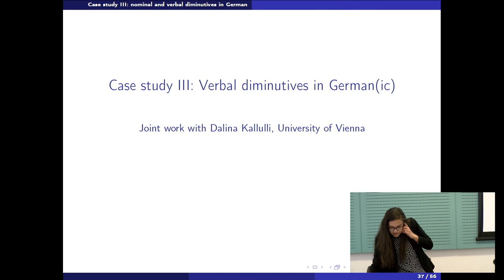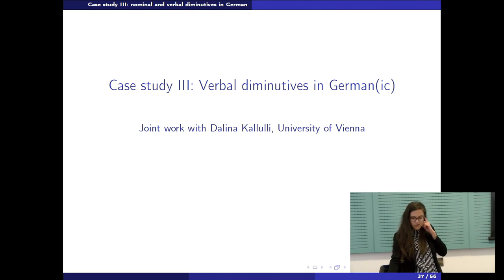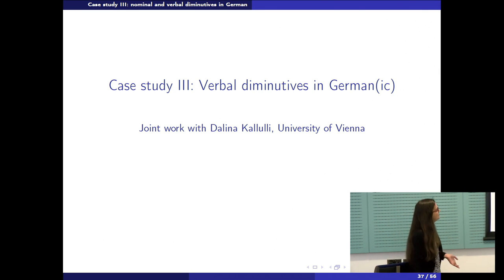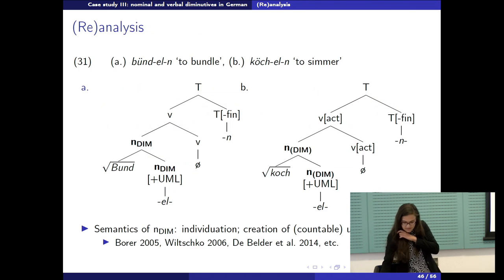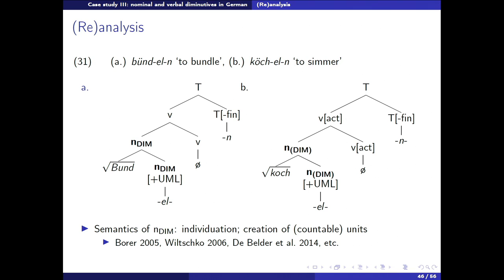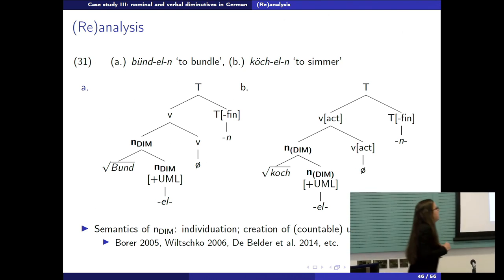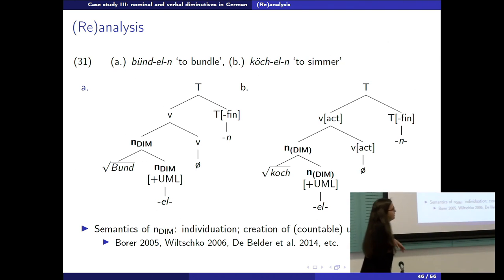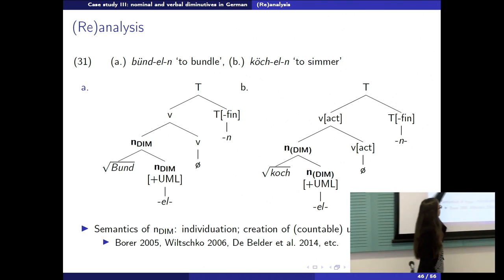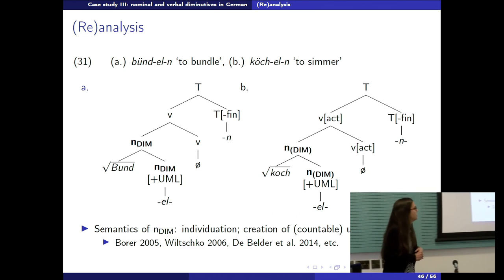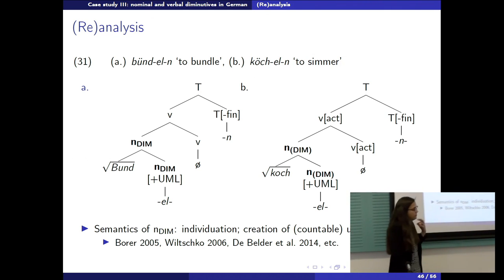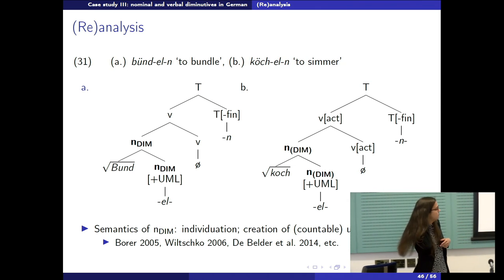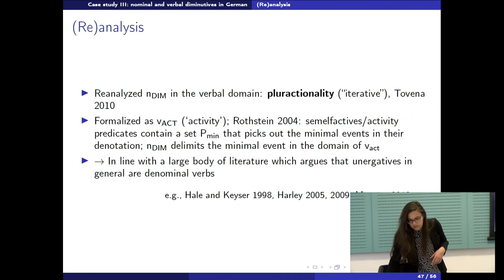I also wanted to talk about verbal diminutives in German and Germanic — the third case study, and actually the most exciting one. Diminutive verbs in German are very productive. They are formed with an l-suffix that seems to be the same one found in nominal diminutives. The idea is that we originally form a nominal diminutive with the suffix and then verbalize it with a verbal category-changing head. This feature becomes reanalyzed as part of the verbal domain, and interestingly, diminutive in the verbal domain seems to mean iterativity — these are pro-actional iterative activity verbs.